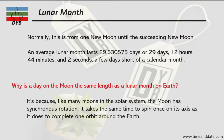Do you know why a day on the moon is the same as the lunar month on the earth? Like many other moons in the solar system, our moon has synchronous rotation — it takes the same time to spin once on its axis as it does to complete one orbit around the earth. That is why the length of a day on the surface of the moon is the same as one lunar month as observed from earth.